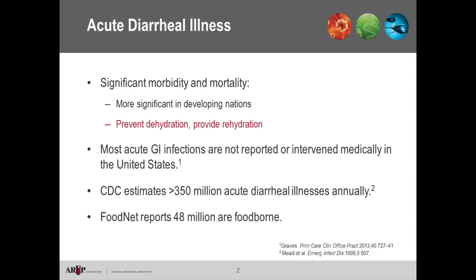If we look at the FoodNet reports — FoodNet is the network that reports food-borne illnesses, specifically GI illnesses linked to a contaminated food product — there are 48 million cases. So roughly one-fifth of our cases are directly linked to the food we're buying at the grocery store.